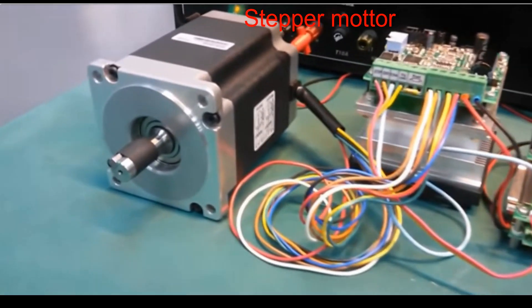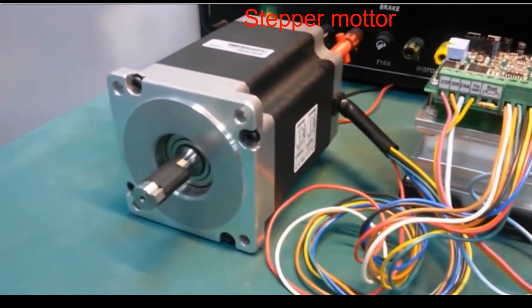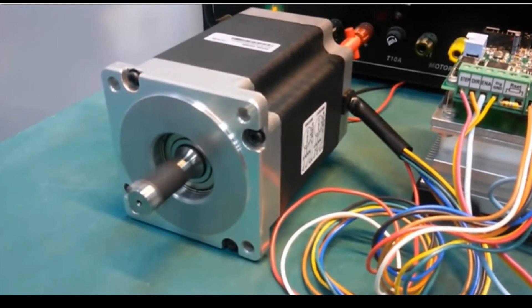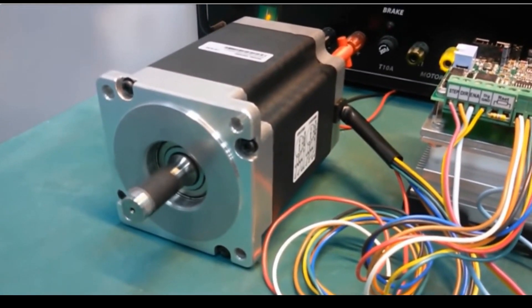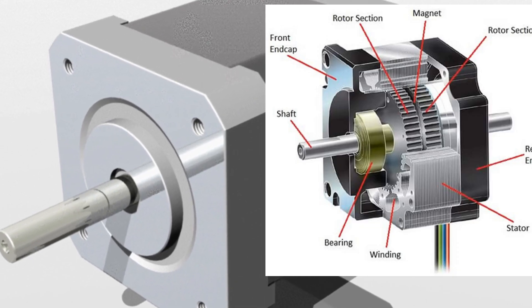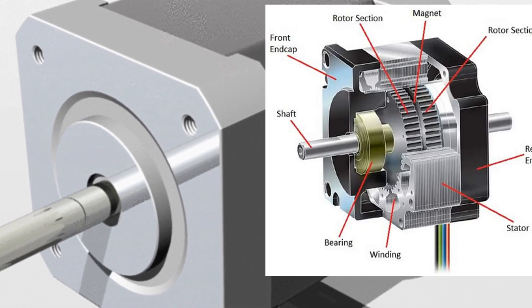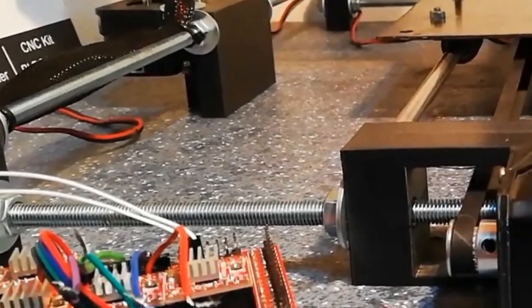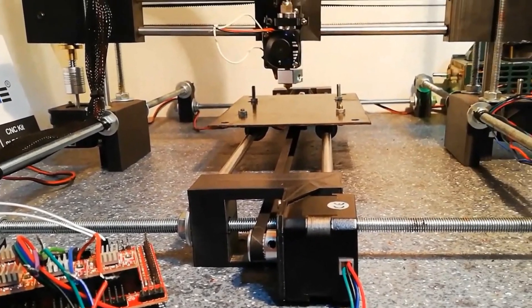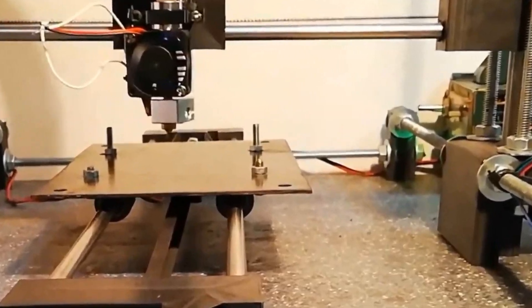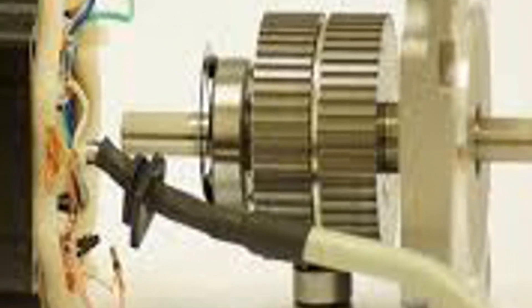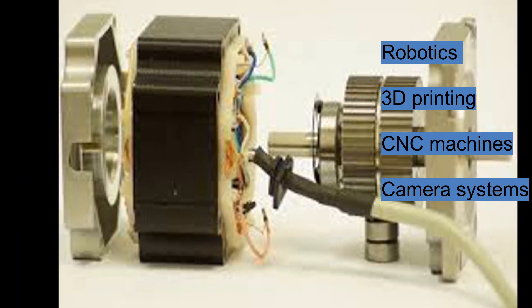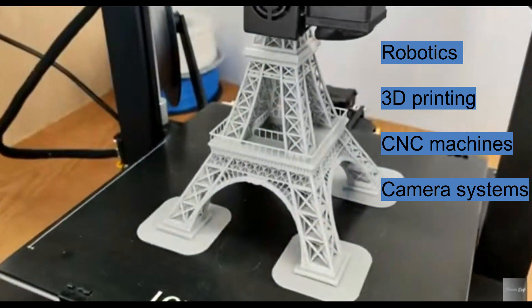A stepper motor is a type of brushless direct current electric motor that divides a full rotation into a number of equal steps. Each step is driven by a specific electrical pulse, making stepper motors particularly well-suited for applications that require precise control over angular displacement. Stepper motors are widely used in various industries and applications, including robotics, 3D printers, CNC machines, camera systems, and more.